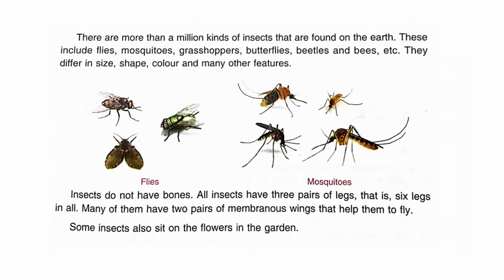Here you can see there are flies and mosquitoes. Insects do not have bones. All insects have 3 pairs of legs, that is 6 legs in all. Many of them have 2 pairs of membranous wings — wings that help them to fly. Membranous wings means the outer covering that covers the back or outer portion of the insect, as in the case of the house fly.